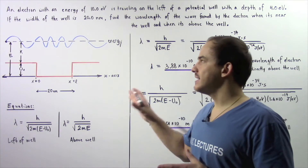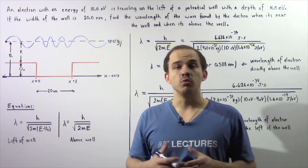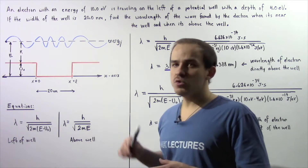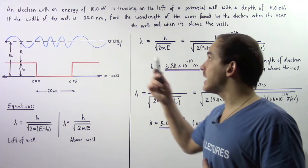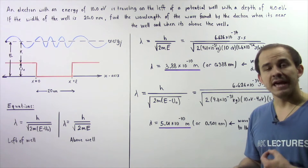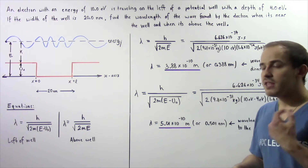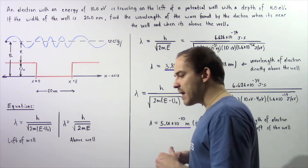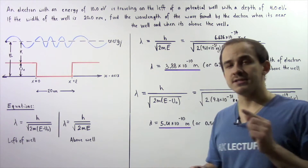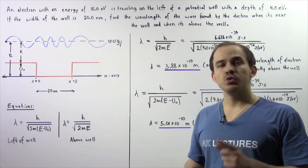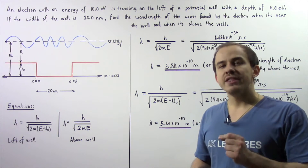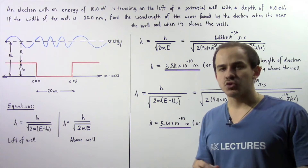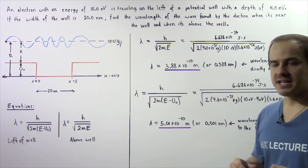Let's examine the following example that deals with a particle moving above a finite potential well. Suppose an electron with a total energy of 10 electron volts is traveling on the left of a finite potential well that has a depth of 4 electron volts. Now if the width of our potential well is 20 nanometers, we want to find the wavelength of the wave produced by the electron when found near our potential well and when found directly above it.